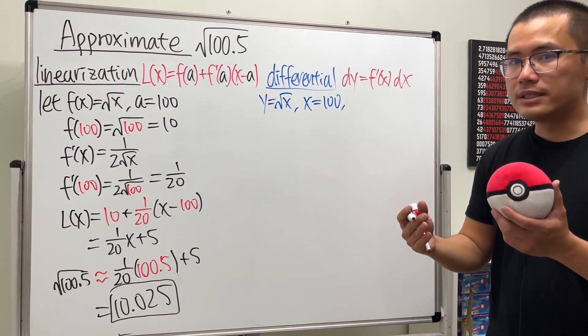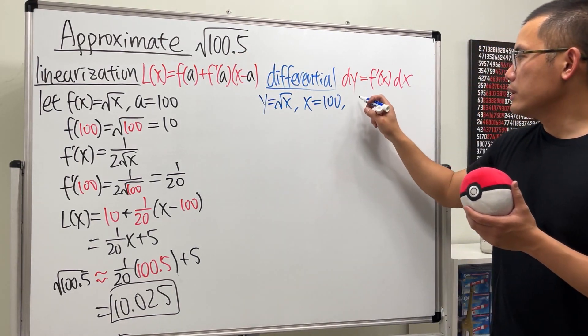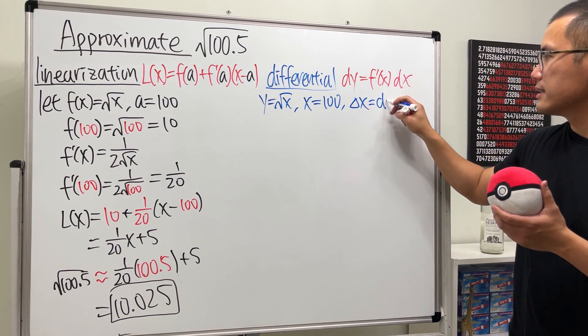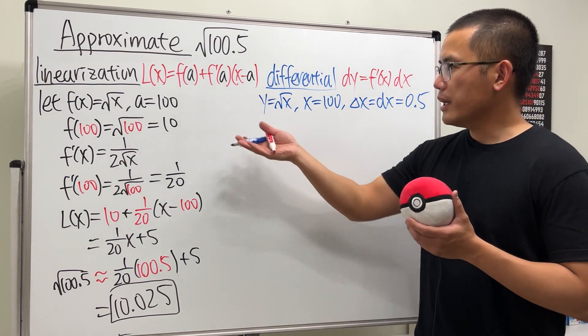And then the difference between the x value here and then the x value that we know is delta x, which we can say that's the same as dx, and that's just 0.5.